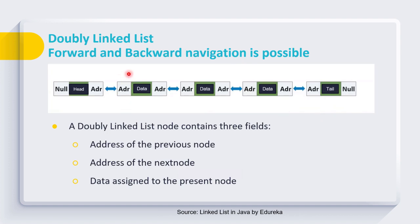In case of doubly linked list, every node has three parts. Both forward and backward navigation is possible, and this is achieved by having three parts in each node. You can see the node has two address parts and one data part, so every node points to the address of the previous node and also to the address of the next node.